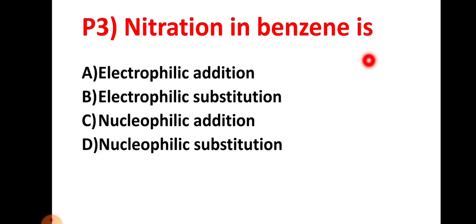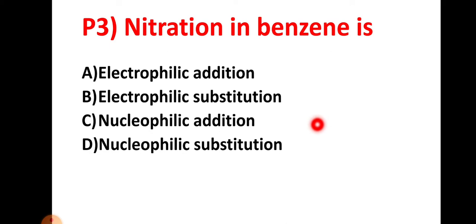Practice question three: nitration in benzene is — option A: electrophilic addition, option B: electrophilic substitution, option C: nucleophilic addition, option D: nucleophilic substitution. This is a practice question for you. Thank you very much.